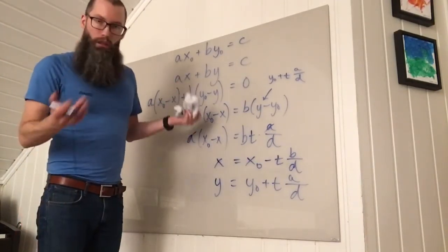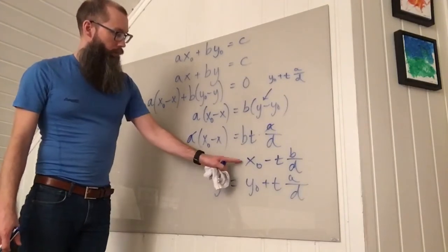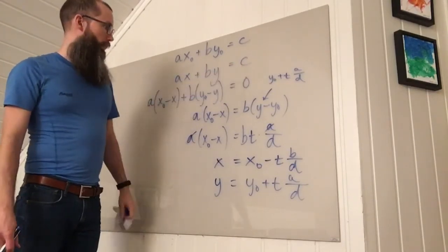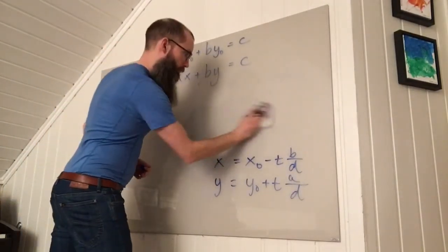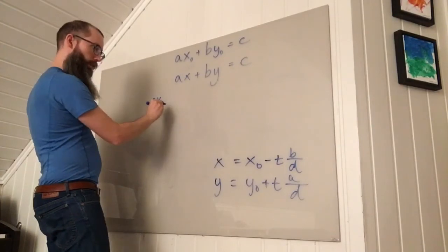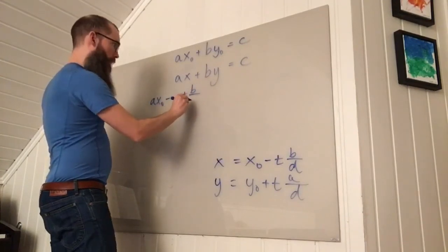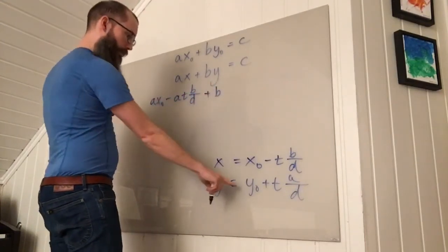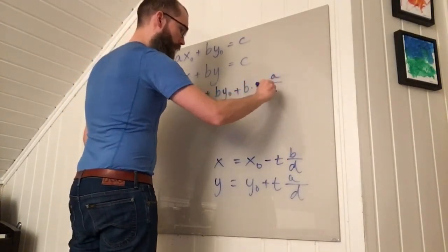So I have to check by substitution. We substitute these two expressions for X and Y and see if we get C in the end. So let's do that. So if I substitute for X, I get A X0 minus A T B by D plus, and then I have B times this expression. So it's B Y0 plus B times T times A by D.